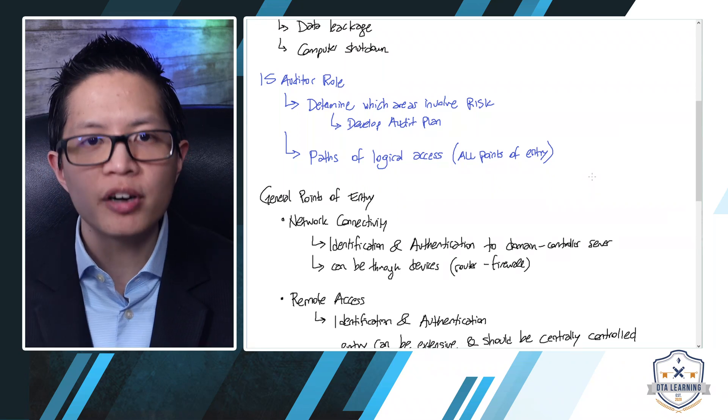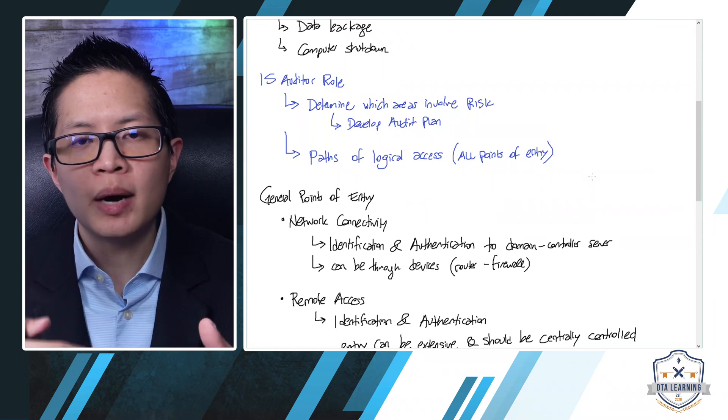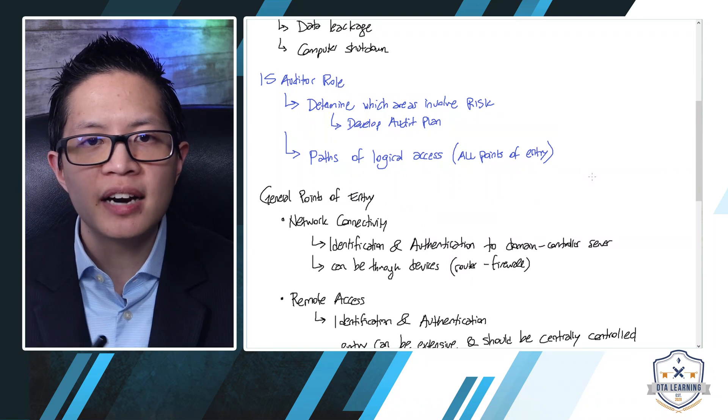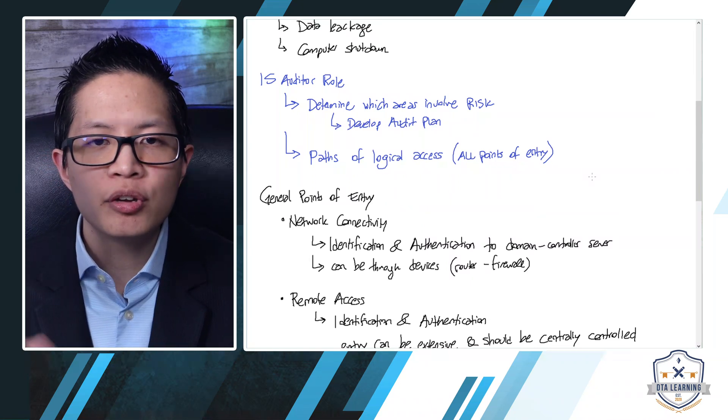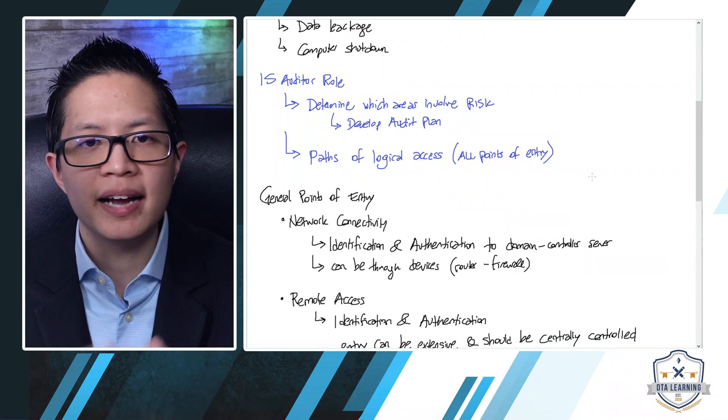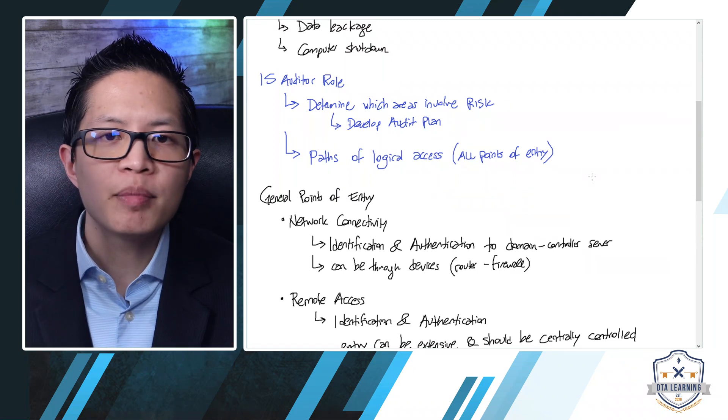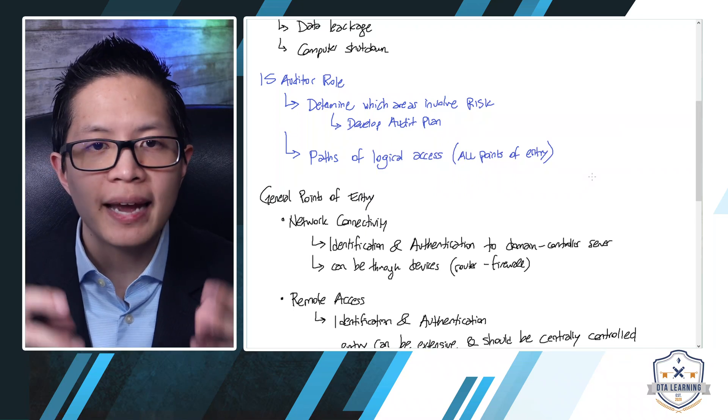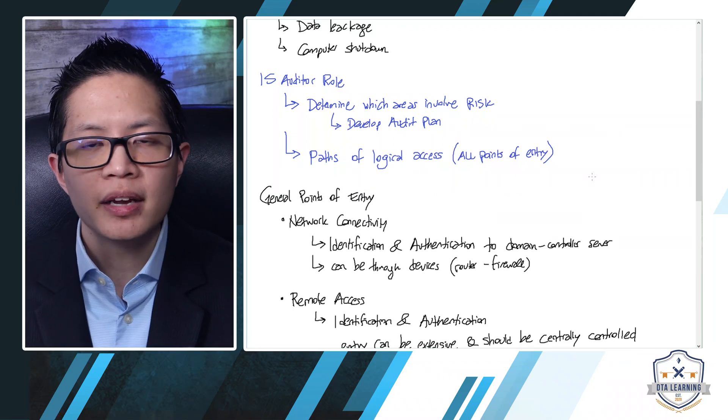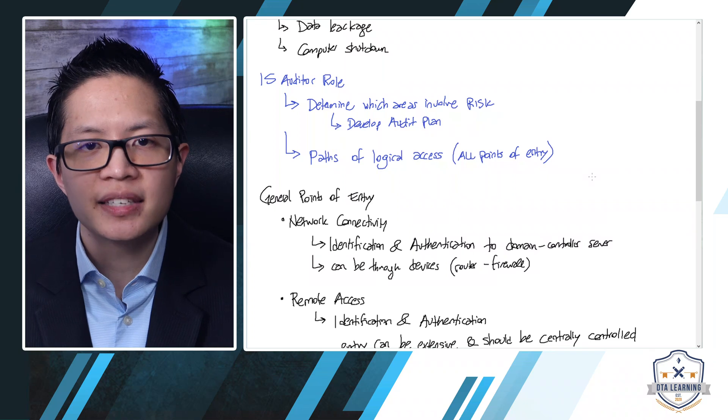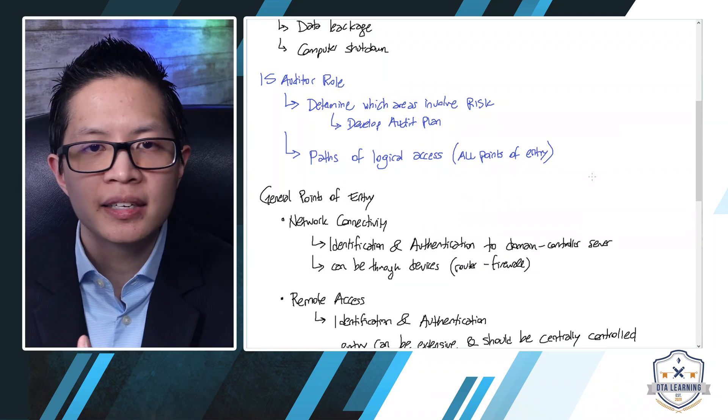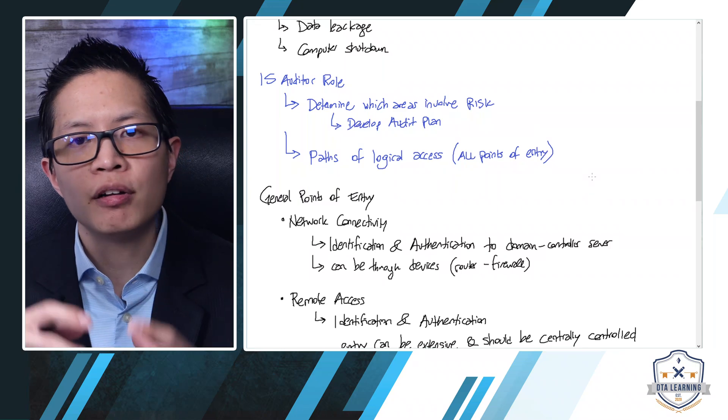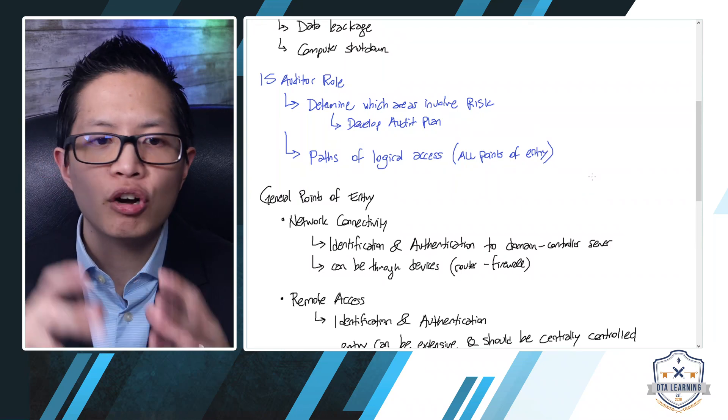So, definitely, you need to look first for the entire universe and do a risk analysis and determination to see which areas are the highest risk that you are going to be evaluating as an IS auditor. But at the same time, you're going to be helping because you're already looking for all the areas, all the entry points to your building, right? All the entry points to your assets, to your information assets.